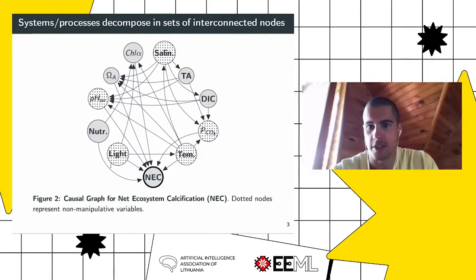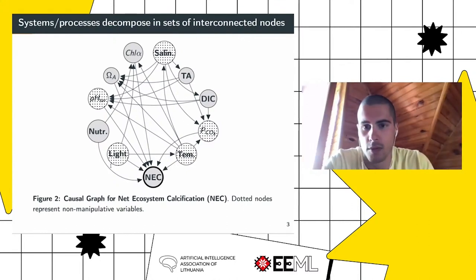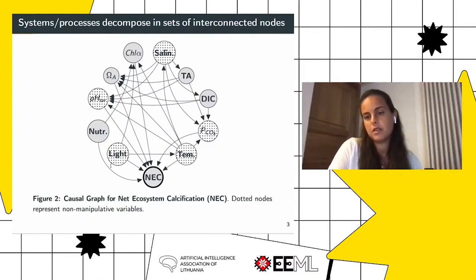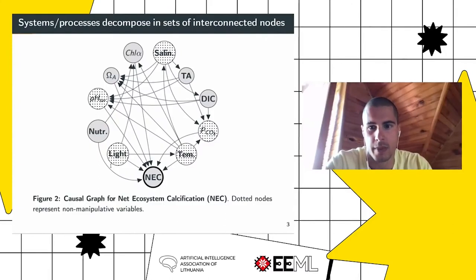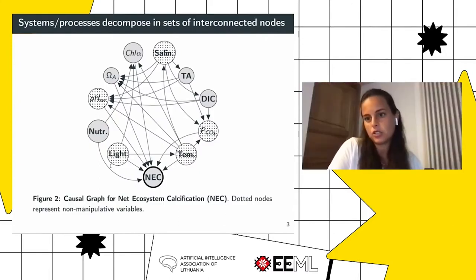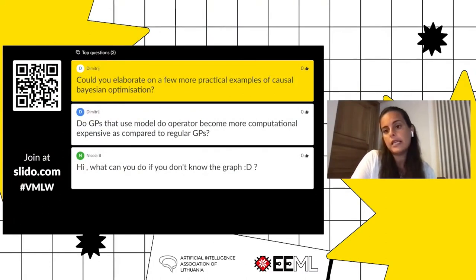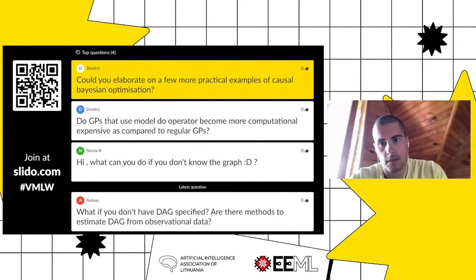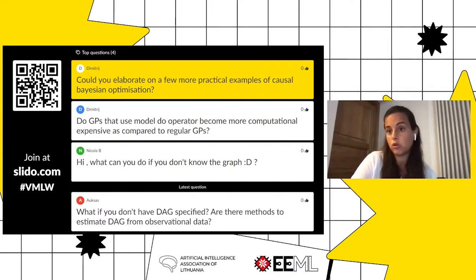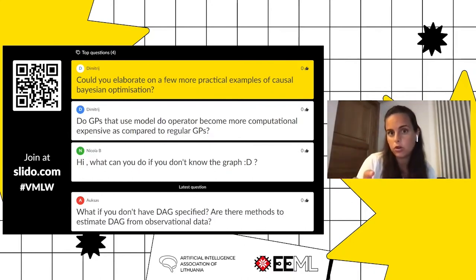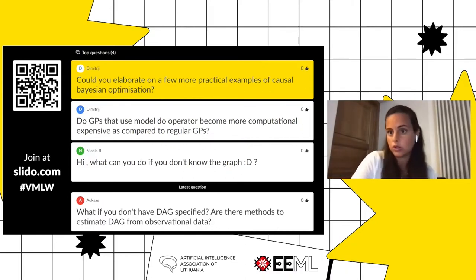Q&A: This sounds similar to a multi-armed bandit — which arm to pull. Yes, absolutely. The difference is that bandits typically have a discrete set of arms, whereas here it's a continuous space. If all variables in the causal graph are binary, you do fall back to a bandit problem. It's slightly different in that bandits maximize cumulative reward, while Bayesian optimization only looks at the optimum of the function without reasoning about cumulative reward. However, you could extend this approach to be non-myopic — looking at cumulative reward — and it would become even closer to a bandit setting.